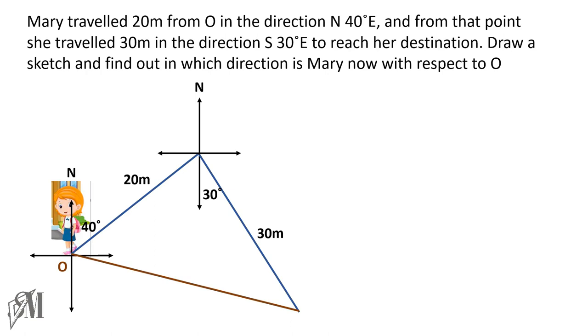So from the starting point to the endpoint, I draw a line like this. And where is Mary now? At the end, Mary is now in the southeast direction from O.